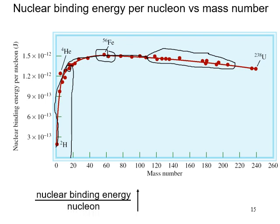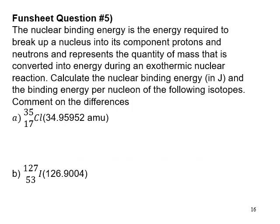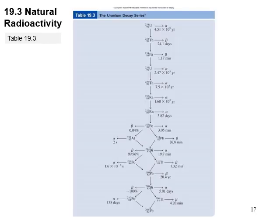For fun sheet question 5, refer back to the slides or textbook example 19.2 for guidance. You need to calculate the nuclear binding energy for chlorine-35 and iodine-127 nuclei following the same steps.